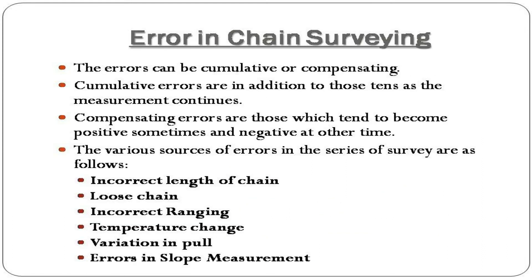Errors in chain surveying can be cumulative or compensating. Cumulative errors increase as the measurement continues. Compensating errors are those which tend to become positive sometimes and negative at other times. The various sources of errors in chain surveying are as follows.